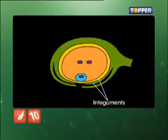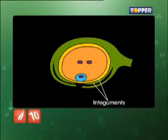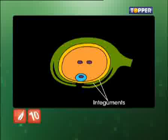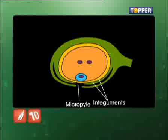Further, the ovule is surrounded by two protective coats called integuments, bearing a small opening at one end known as the micropyle.